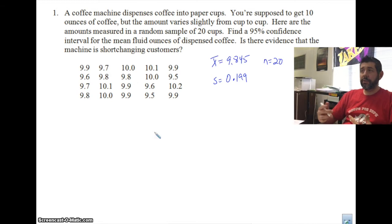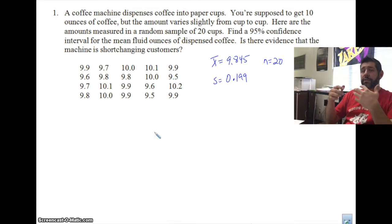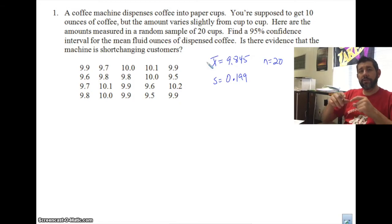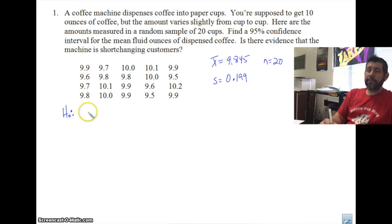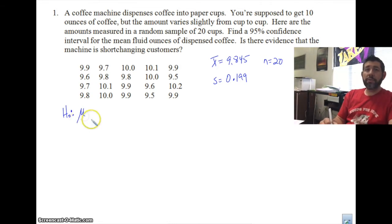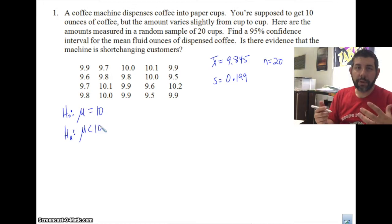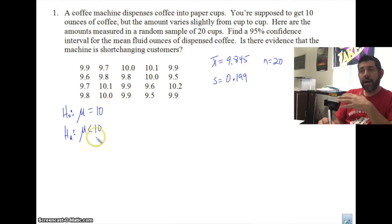We have our statistics and we're going to compare them to our null hypothesis. We're running a hypothesis test to see if there is evidence that the machine is shortchanging customers. Our null hypothesis is H₀: μ = 10 ounces. The alternative hypothesis is Hₐ: μ < 10, since we want to know if customers are getting less coffee than they're supposed to.